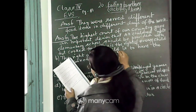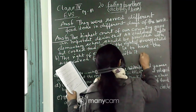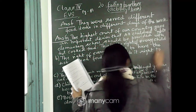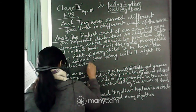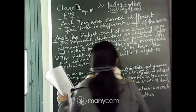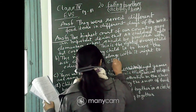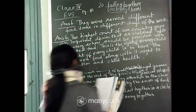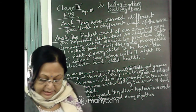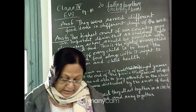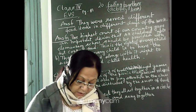Question H: what is the right of every child? The right of every child is to have hot cooked food, along with it the right to education and child health.